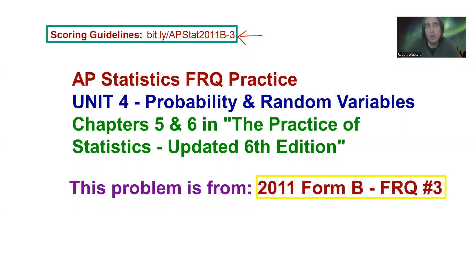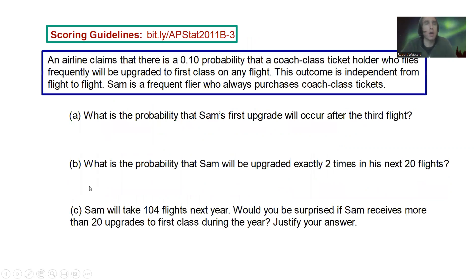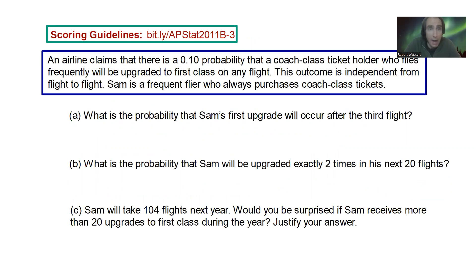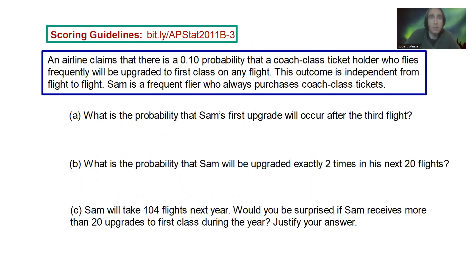If you want to see the scoring guidelines first and check them with your questions before you watch the video, go ahead. An airline claims that there is a 0.10 probability that a coach class ticket holder who flies frequently will be upgraded to first class on any flight. This outcome is independent from flight to flight.